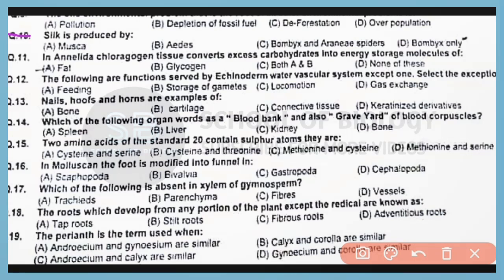Question number 10. Silk is produced by insect Bombyx mori only. Correct answer is option D.